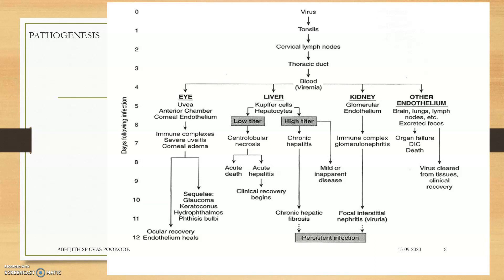Then it moves to the thoracic duct — the lymph duct — and gets into the blood, producing viremia. The virus mainly settles in the eye, liver, kidney, and other endothelium. In the eye, it affects the uvea, anterior chamber, and corneal endothelium, producing severe uveitis and corneal edema, leading to Blue Eye disease, which we will come to later.